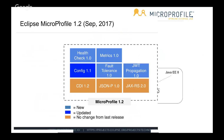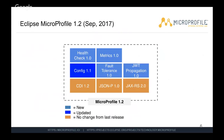MicroProfile started with a 1.1 release that added config to the 1.0 baseline of JAX-RS, CDI, and JSON-P. For 1.2 this year, we added the fault tolerance, health check, metrics, and JWT propagation specs. Version 1.3 is just around the corner. These are the contents of MicroProfile 1.2: the orange boxes show 1.0 content, dark blue config got its 1.0 in 1.1 and an update in 1.2, and the new additions are health check, metrics, fault tolerance, and JWT propagation.